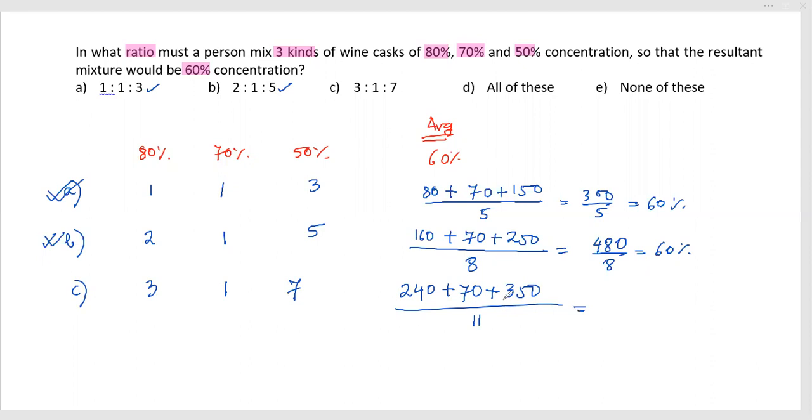So it is 240, 70, 350—that's 660 divided by 11, which equals 60%.